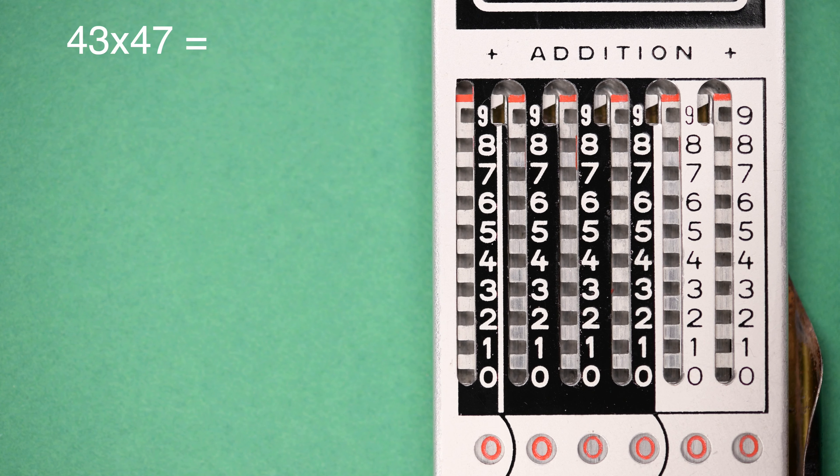Multiplication on these calculators is done with repeated addition. Now this is less tedious than it might sound. Let's multiply 43 by 47. We do this by first adding 47 three times.